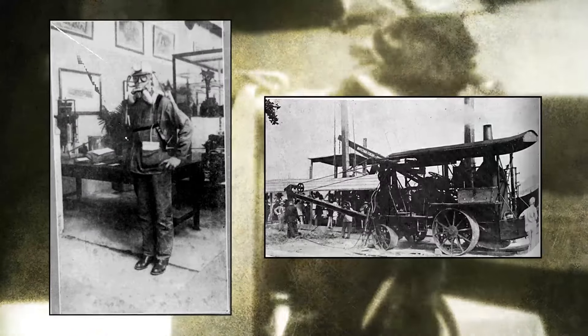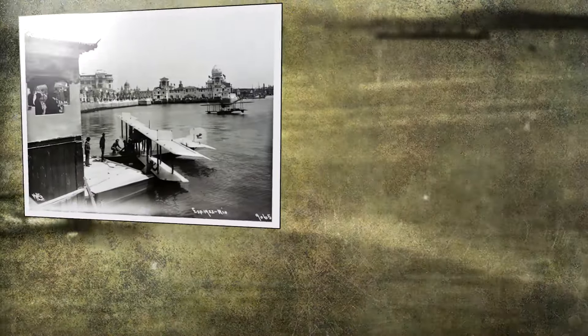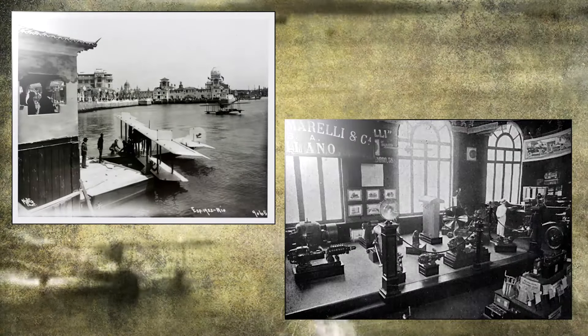Em muitos desses eventos, chama atenção a preocupação dos organizadores em mostrar ao público o que eles chamavam de 'vale das luzes' — todos os avanços, aparatos e instrumentos tecnológicos conquistados, assim como todos os recursos naturais que o Brasil dispunha. As ciências pautavam boa parte da agenda da exposição: havia demonstrações de aparatos tecnológicos e aviões no espaço da própria exposição.